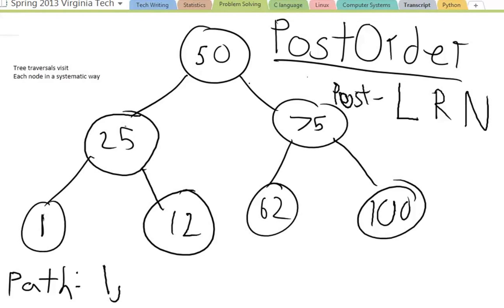And 12, again, I can't go left, I can't go right, so I visit the node. I'm at 12. And 12 I've already visited, I've already tried that, so I can't go left, can't go right, go back to this node of 25. 25, I've visited the left subtree and I've visited the right subtree, so I finally can visit node 25.